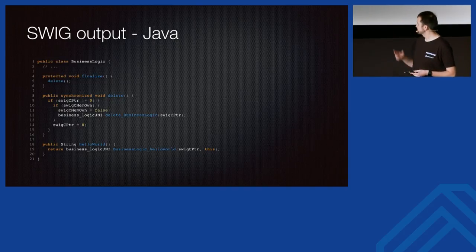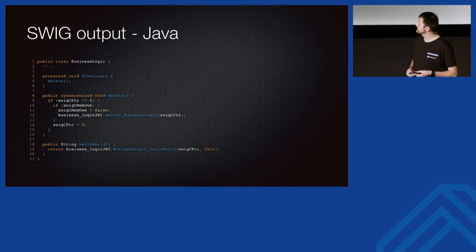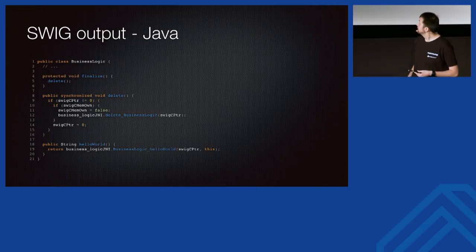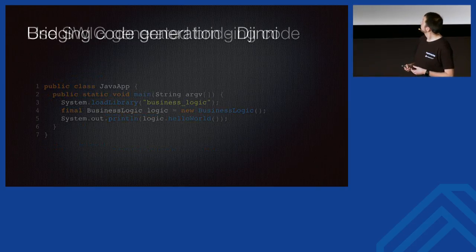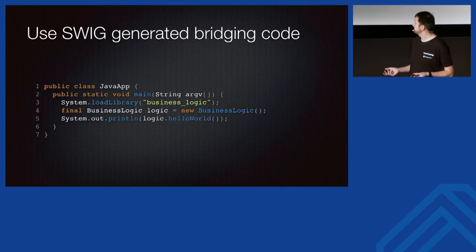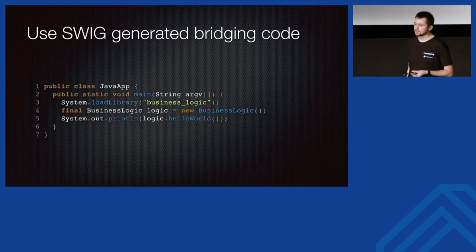SWIG generates both the C++ pass-through and Java code. The generated Java code includes a hello_world method communicating with C++, plus memory management methods — a finalize method that calls delete and some JNI cleanup. To use the SWIG-generated code, you load a shared library and you have a BusinessLogic class that looks just like the C++ class, calling all the same methods the same way.